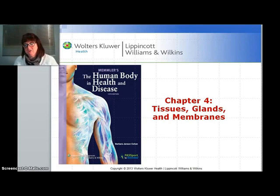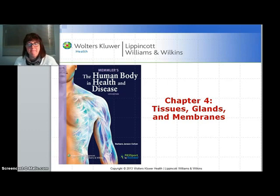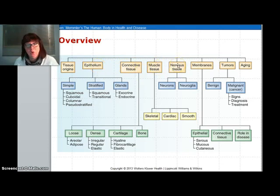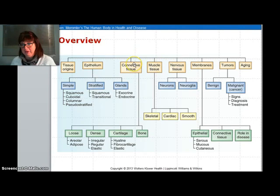Hello, we're going to look at a brief introduction into chapter four. Chapter four is tissues, glands, and membranes. To get a good overview of the chapter, we are looking at tissue, and there are four major types of tissue: epithelium, connective, muscle, and nervous. It's important you know which tissues are in each classification and what the main purpose of them is. We're also going to look briefly at membranes and a bit of glands.